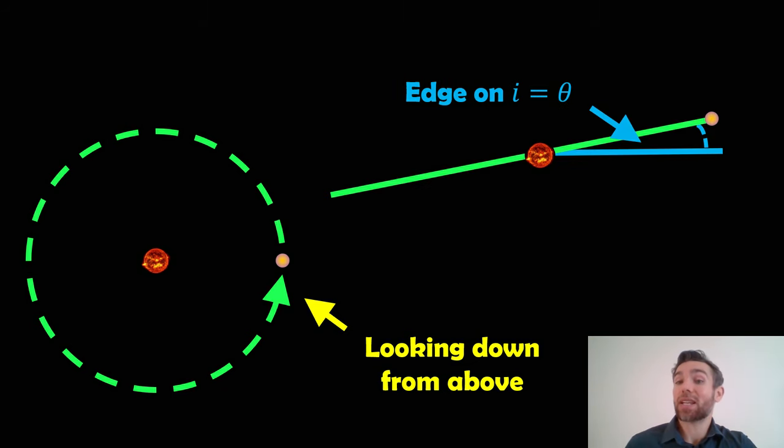If it has some inclination angle like here, let's say that our reference plane is the blue line. If the orbit is slightly inclined to that reference plane, then it will be inclined by some angle.